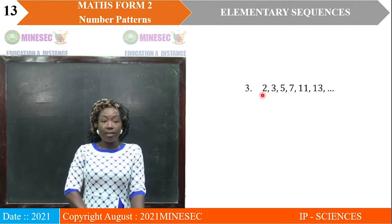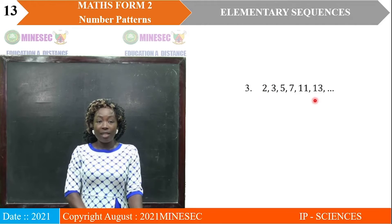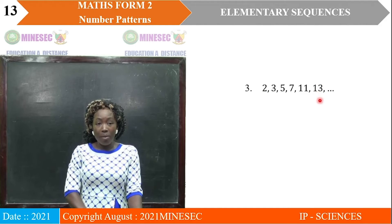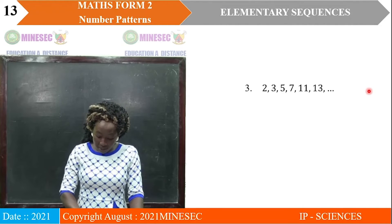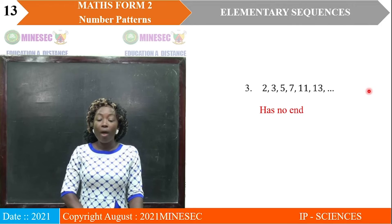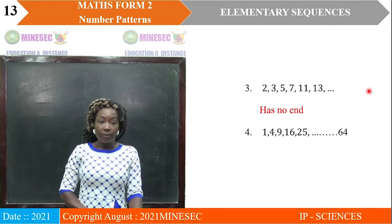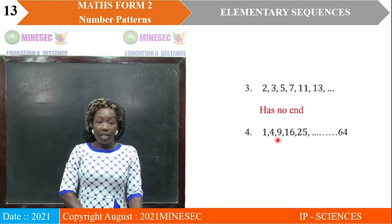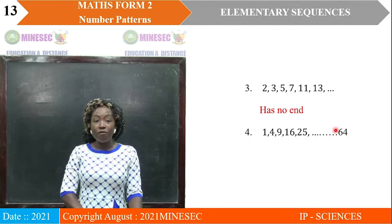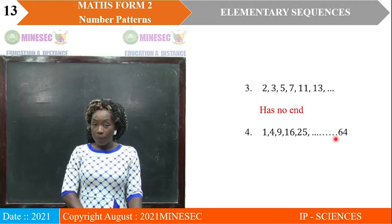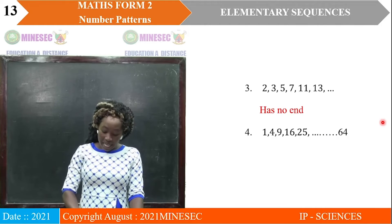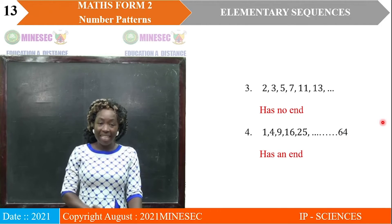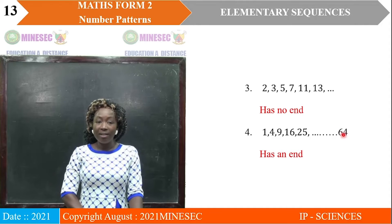The next sequence: its last term is 13, there is a comma behind 13, and three dots after 13 — meaning that sequence has no end. In another sequence, the dots are before 64, not after 64. Since the dots are before 64 and not after, this particular sequence has an end and it ends at the number 64.